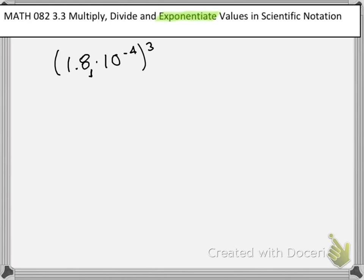So we have two different pieces. We have 1.8 here, and we have 10 to the negative 4th. So we're going to have to use the power rule here. If you recall from a previous section, the power rule says that when you have a power raised to a power, we just simply multiply those exponents.